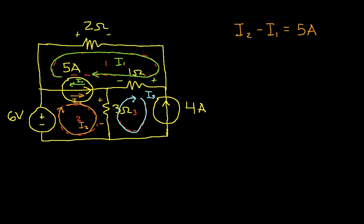Again, this current source is placing a constraint on the relationship between I1 and I2. So that's one equation.